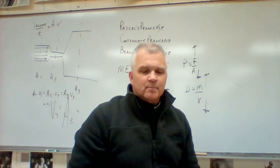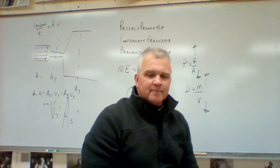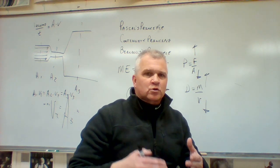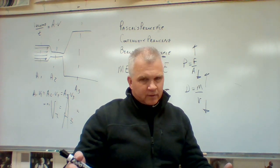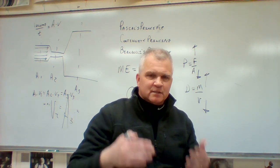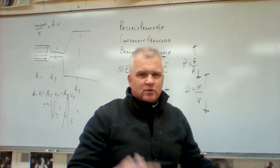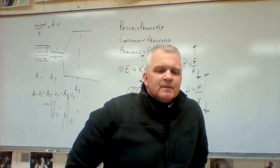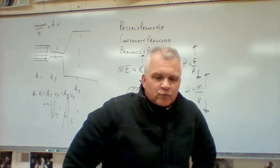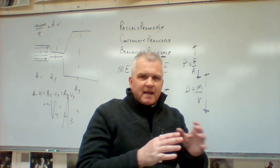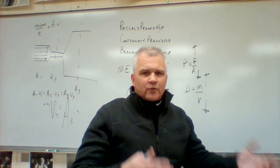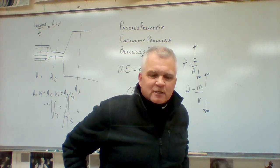Question six: the maximum buoyant force acting on a submerged object depends on the object's volume, because it's the volume of the object that determines how much fluid it can displace. The weight of that fluid then determines what the buoyant force is. Question seven: a fish changes its vertical motion by changing the buoyant force — it can expand and contract its air sacs, which changes the volume and thus the weight of fluid displaced.